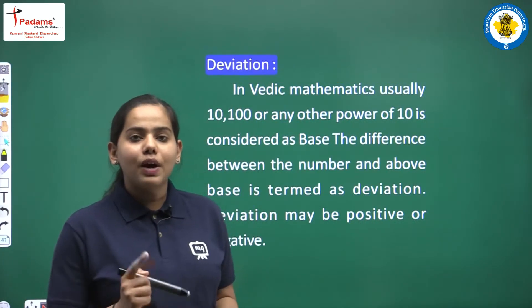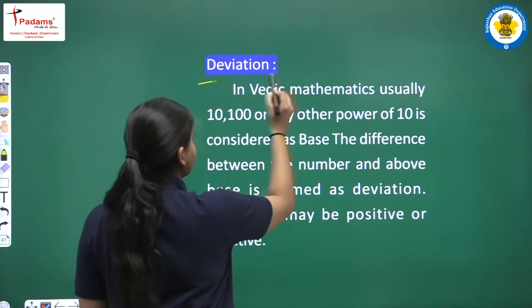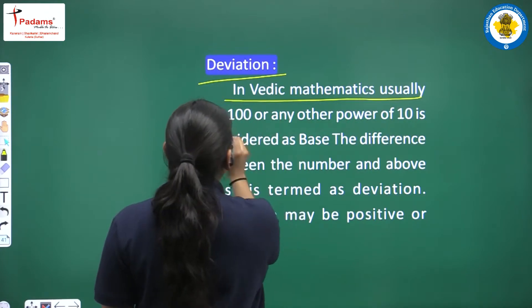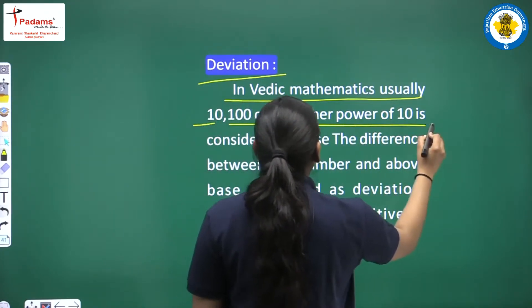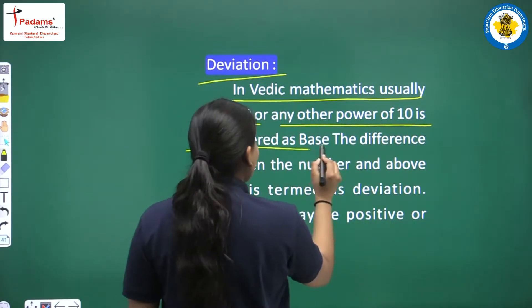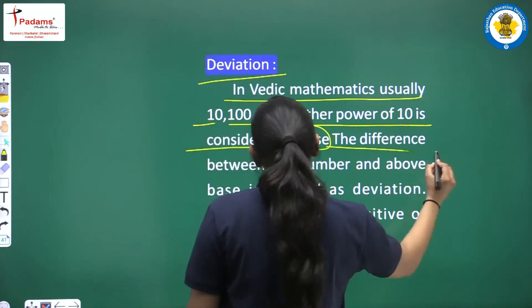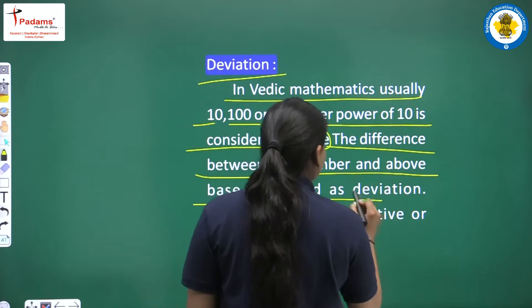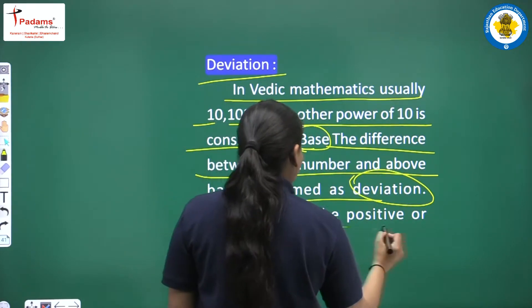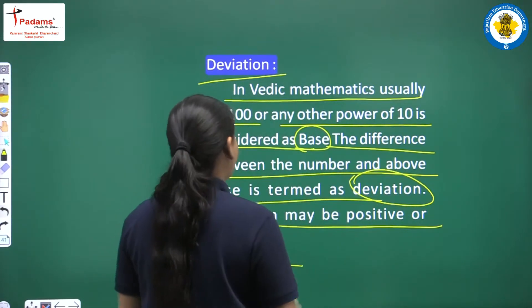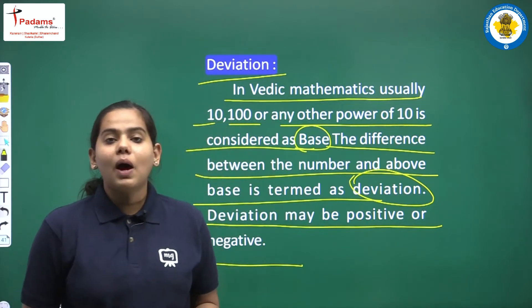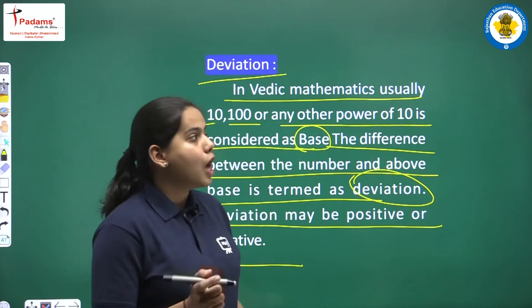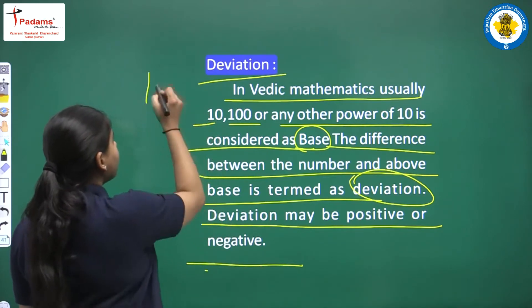Now let us learn one more concept, that is deviation. In Vedic Mathematics, usually 10, 100, or any other power of 10 is considered as base. The difference between the number and the base is termed as deviation. Deviation may be positive or negative. We take base — what is base? It is any power of 10: it can be 10, 100, 1000, 10,000 and so on.